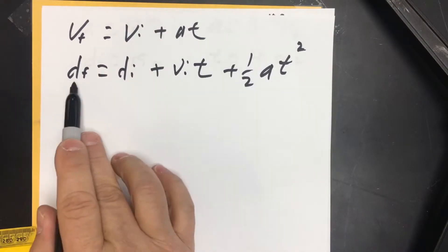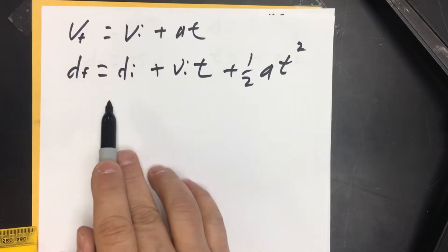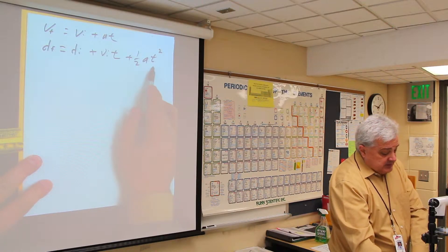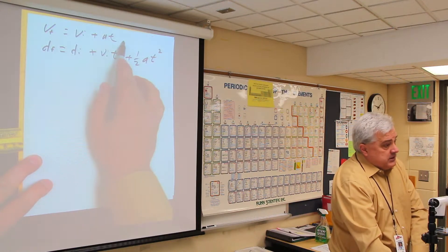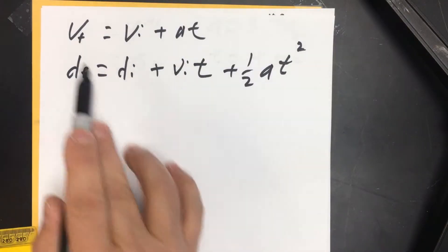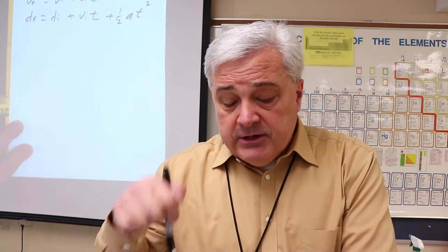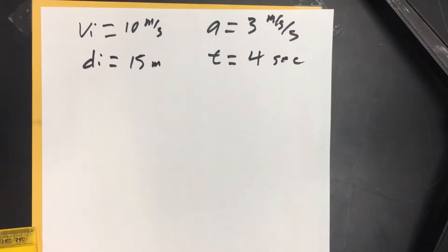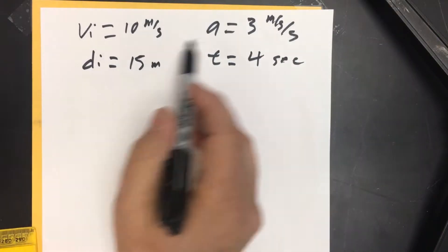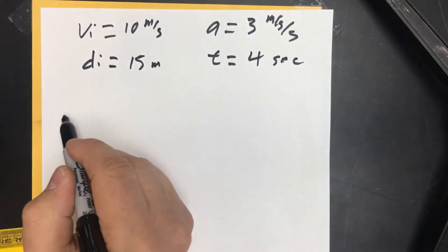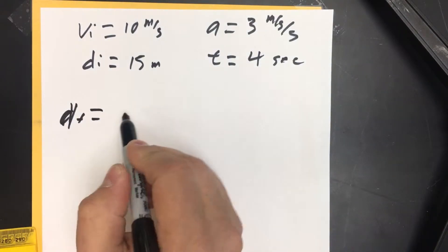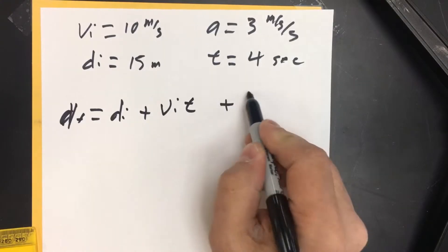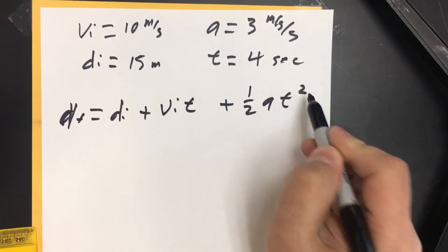If you don't have distance, use this equation. If you do have distance, use this equation. This is the only equation with distance, this is the only equation with final velocity. That's how you know which equation to use. Our question was what's the final distance given these variables, so d_f equals d_i plus v_i*t plus one half a*t squared.